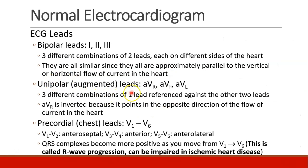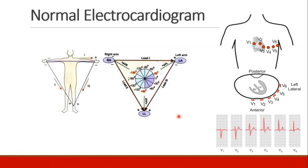We also have the unipolar or augmented leads: AVR, AVF, and AVL. They are different combinations of one lead referenced against the other two. AVR is a bit inverted because it points in the opposite direction of flow in the heart. AVL goes right to left, AVF goes downward, but AVR goes up and towards the right — which is backwards from all the others. So many things that are positive in other leads may appear negative in the AVR lead.